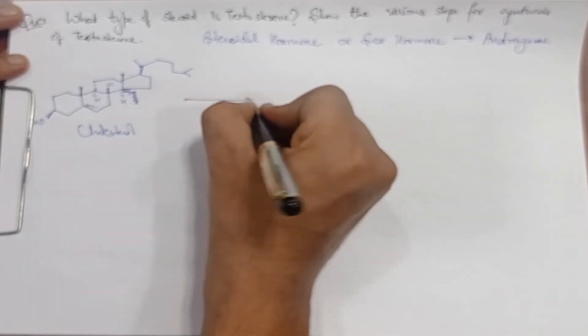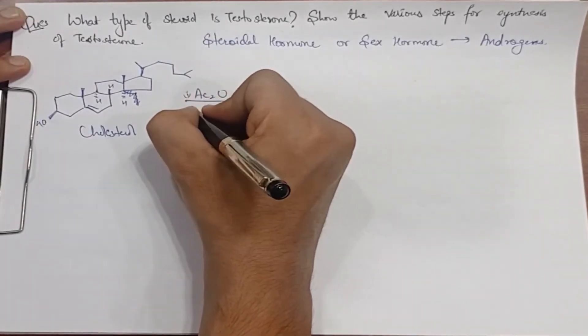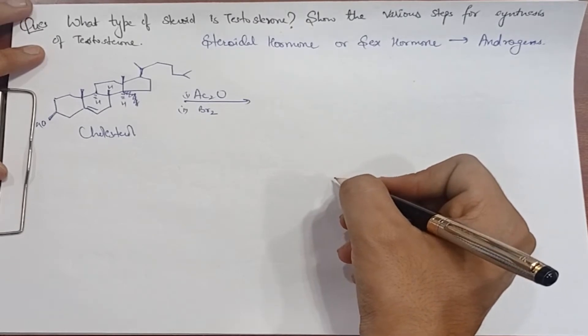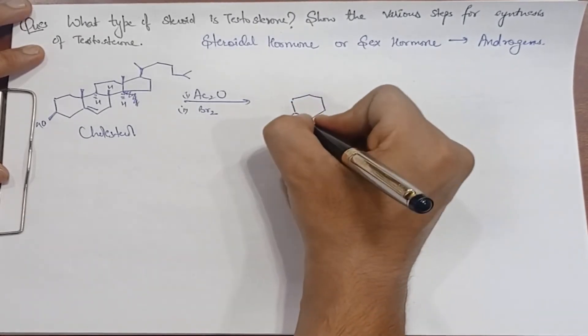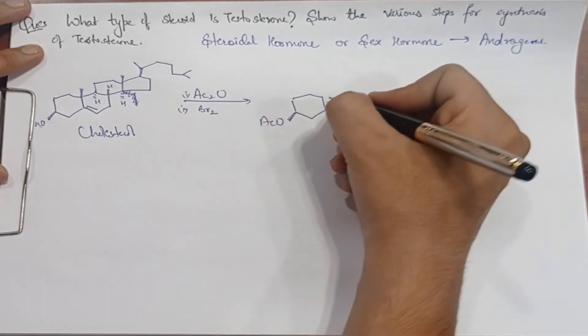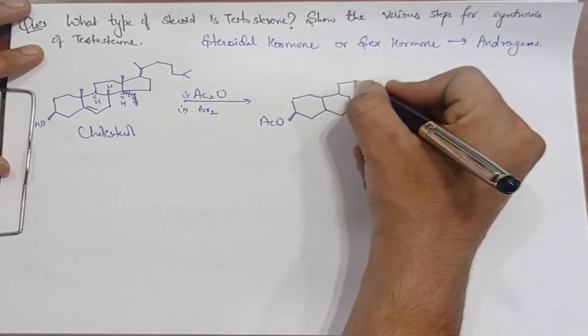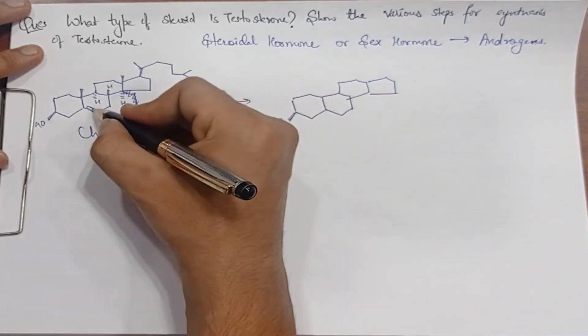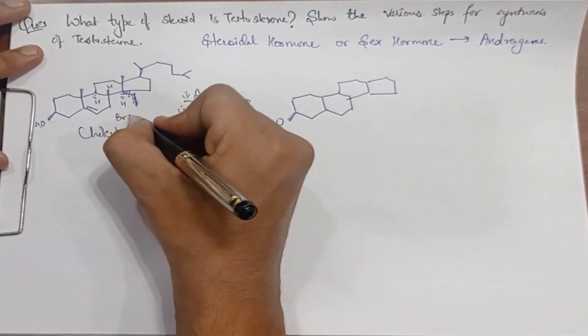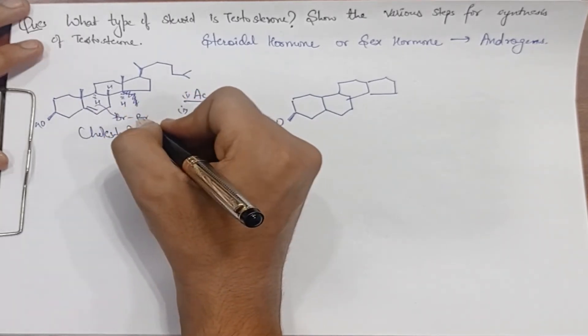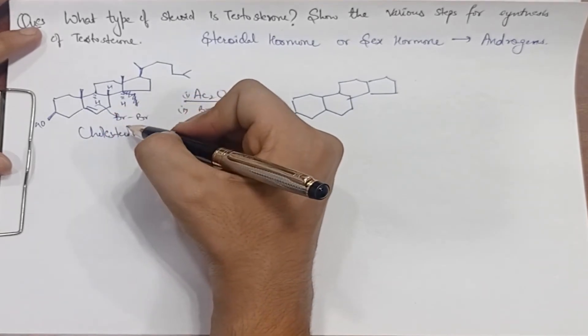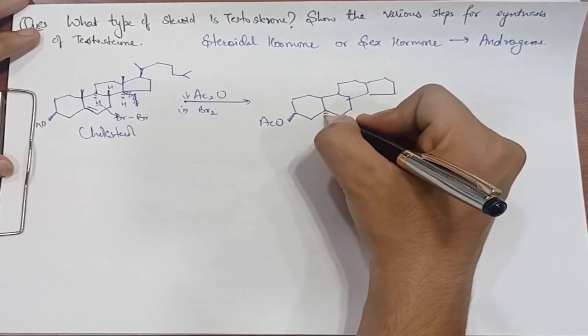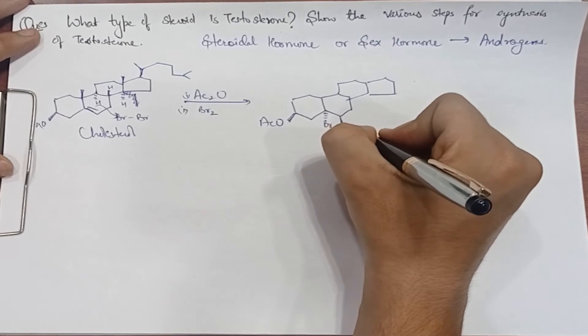We will add another group. First we add an OH group. For example, this is the structure. The rest will remain the same. Now we add Br2 to the double bond. First we attach one Br, then the second Br attaches where the negative charge is. Here we add Br as a dash and as a wedge.